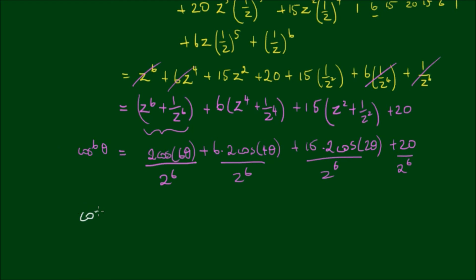We have cos to the 6th theta equals 1 over 2 to the 6th times (2 cos 6 theta plus 6 times 2 cos 4 theta plus 15 times 2 cos 2 theta plus 20). And can we now easily integrate the right-hand side of the equation?